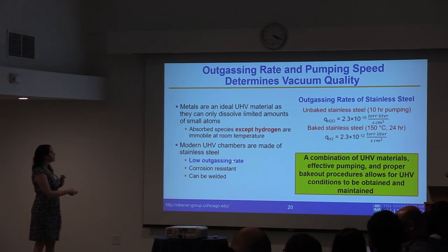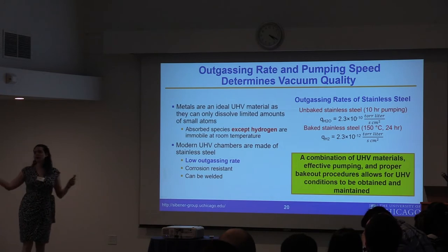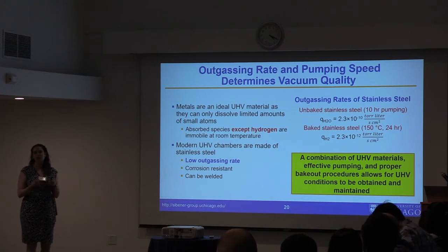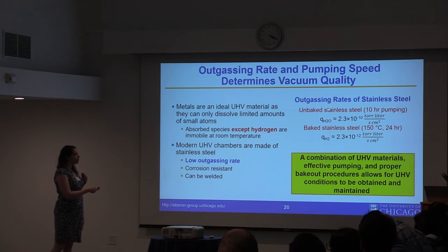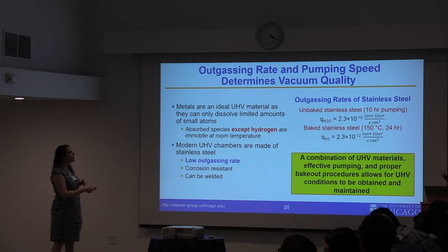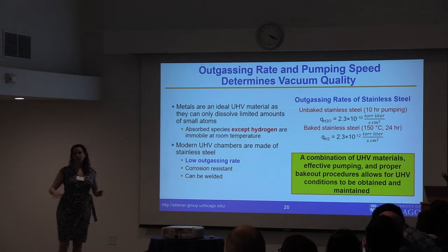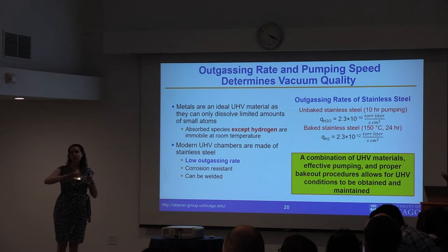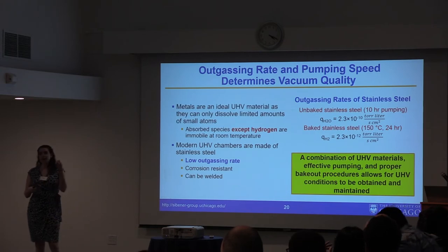Most UHV chambers today are made of stainless steel because it has a lower inherent outgassing rate, is corrosion resistant, and can be welded. As-manufactured stainless steel has water desorbing at about 2×10⁻⁹ torr·liters per second per unit area. That will result in a higher chamber pressure. But if you bake your stainless steel — raising it above at least 100°C to drive off water from the interior and facilitate desorption of trapped gases — you can get the outgassing rate down to 10⁻¹² torr·liters per second, allowing for a much cleaner system.